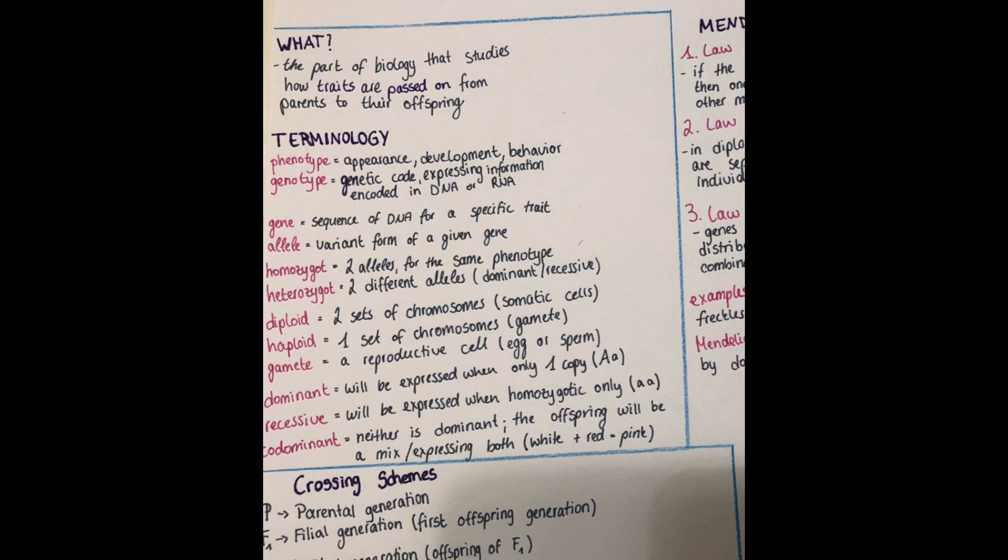And then there's another form which is codominance. That is when neither of the two alleles is dominant, so the offspring will express both or a mix of it. For example in a special form of crossbreeding of certain plants, the offspring of a red plant and a white plant will give off pink plants in the next generation.